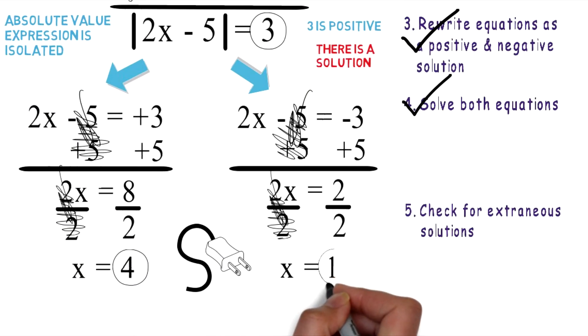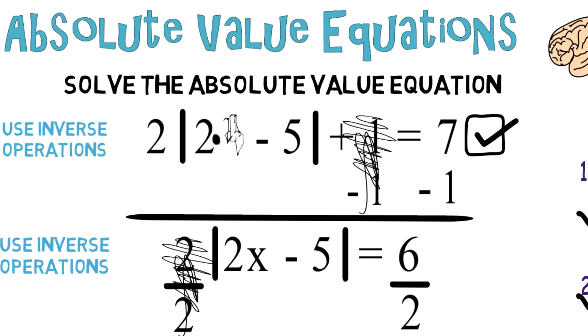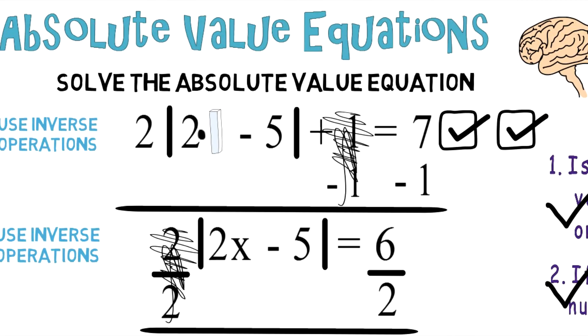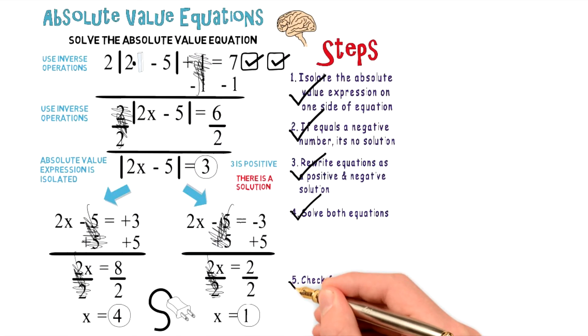Do the same thing with one. Plug in one for x. And if you work that out, it'll check out as well. So now we've checked for extraneous solutions.